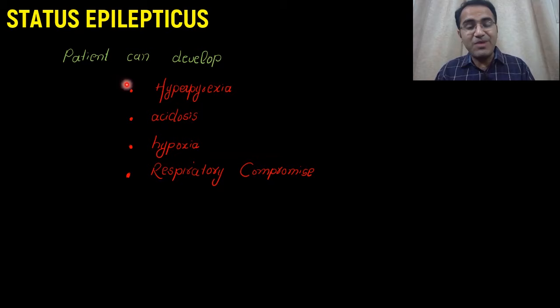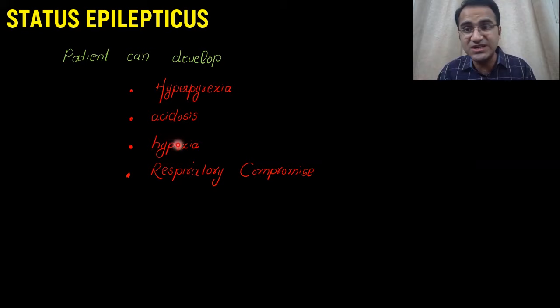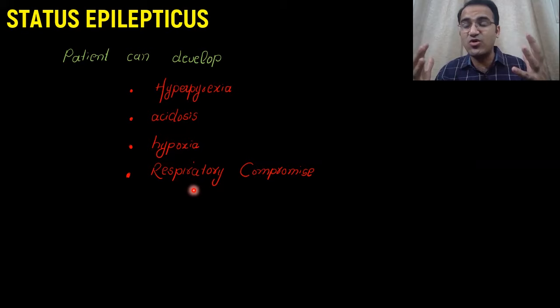The patient can develop hyperpyrexia, since increased muscle contraction generates heat. Increased ATP breakdown will also cause hyperpyrexia. The patient will develop acidosis since more energy is being consumed, more carbon dioxide is generated, and that carbon dioxide results in acidosis. The patient can also develop hypoxia due to increased metabolic demand, and respiratory compromise when abnormal muscle contractions start affecting the respiratory muscles.